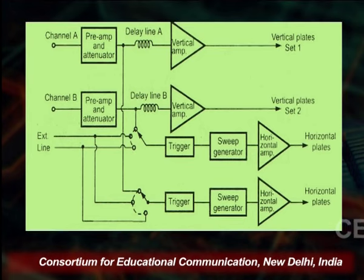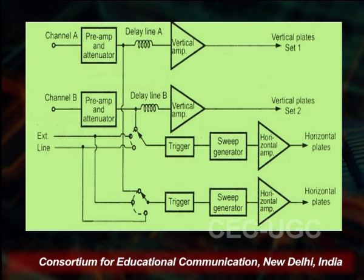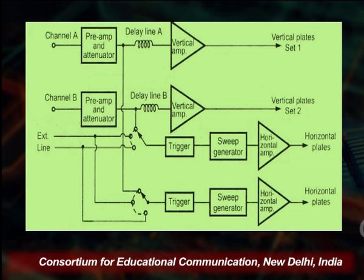Such an oscilloscope may have separate time-based circuits for separate channels. This allows different sweep rates for the two channels, but increases the size and weight of the oscilloscope. Basically, triggering from an external signal to the oscilloscope is used to get the desired output.